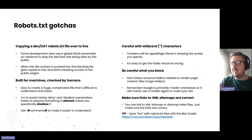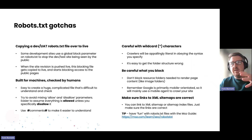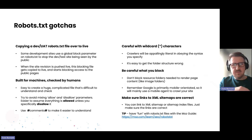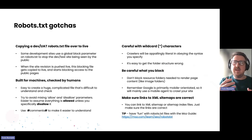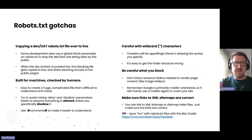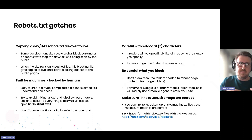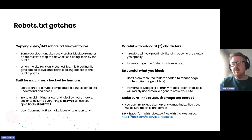Some of the main issues we see are around when people carry over the robots.txt files from their development site onto live. When that gets copied over, you might have a rule in the robots.txt on the UAT or dev site which disallows everything from crawling.